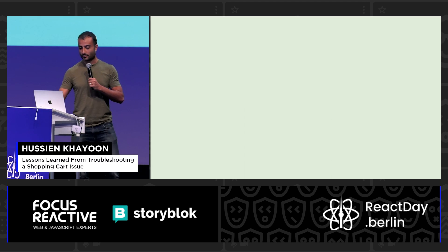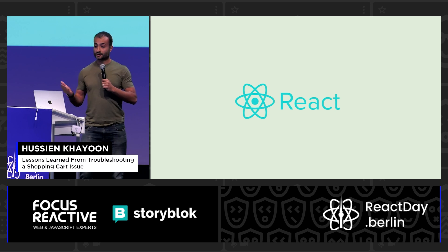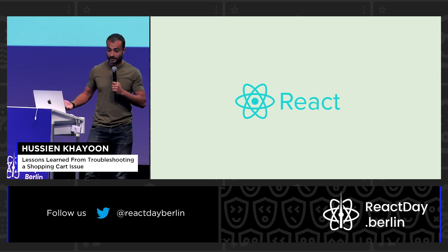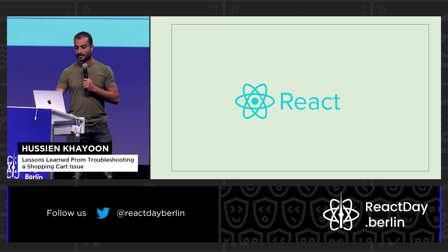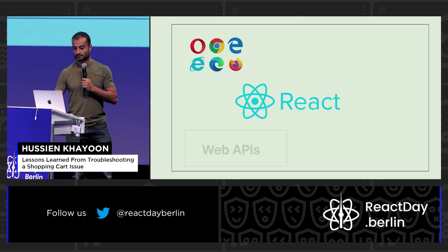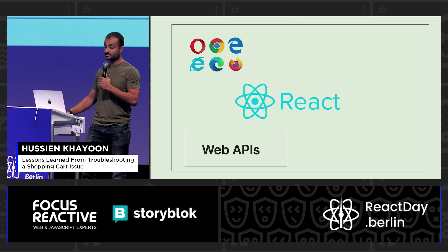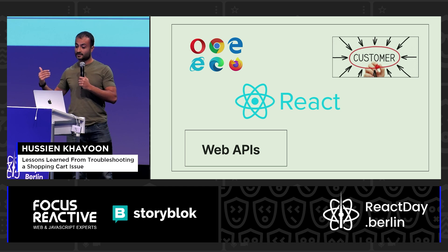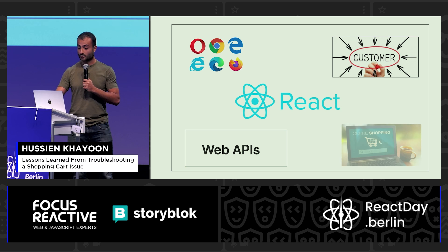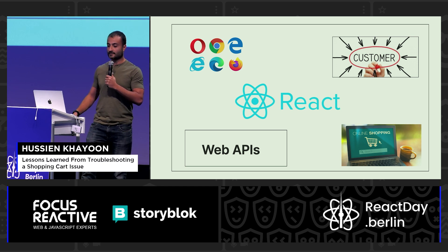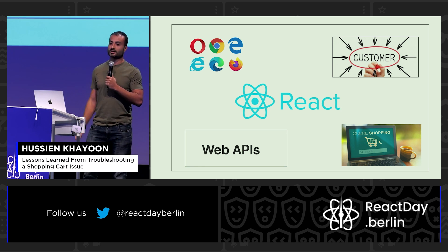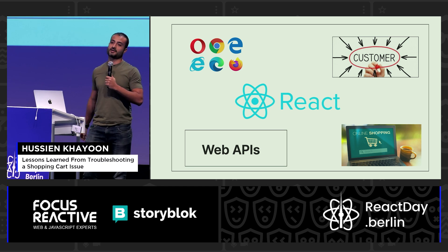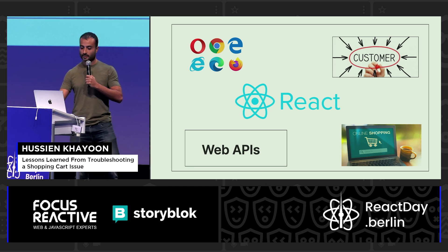Why this talk? Today we're talking a lot about React, and a lot of us use React and code in React. But the reality is you always work with an ecosystem. Whether it's the browser, the web APIs, event listeners — you deal with customers and a business domain. Specifically me, I'm in e-commerce. So you deal in an ecosystem, it adds complexity to your app, which in turn adds bugs to your app. Today I'm talking about one of those bugs that I had.